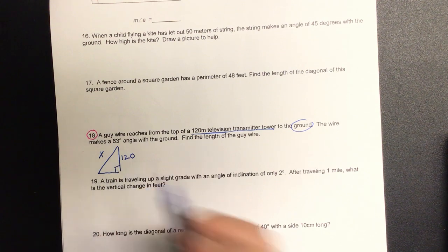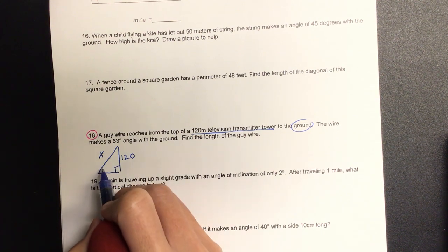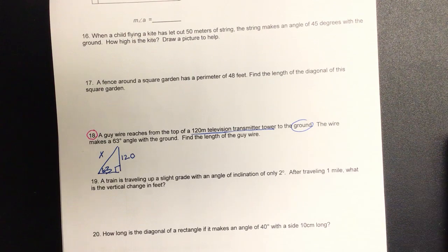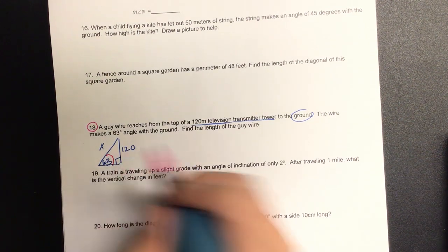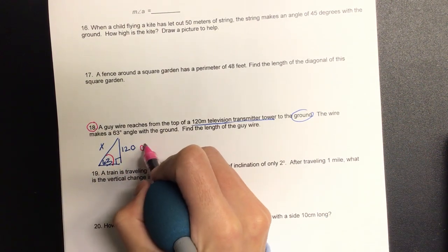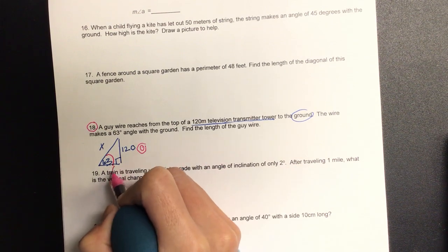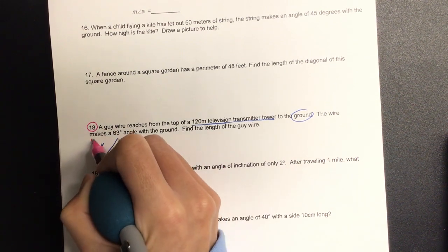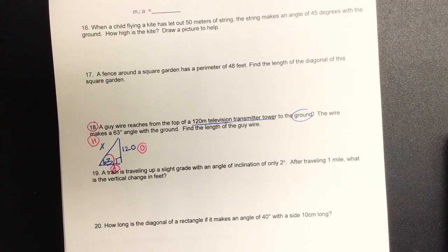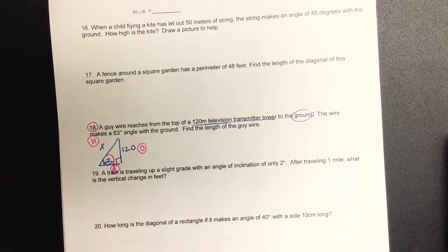And the guy wire is to the ground, so that means we're looking at this guy right here. And let's put in our right angle and it makes sixty-three degrees. Let's go ahead and label in respect to sixty-three. When I jump, it's my opposite, then I have my adjacent, even though I don't need it, and there's our hypotenuse.